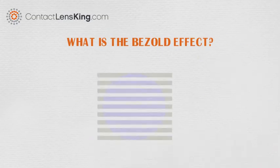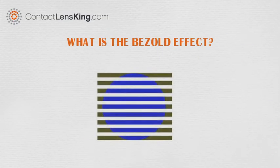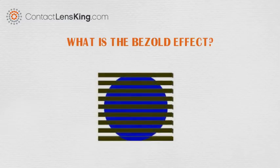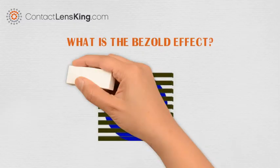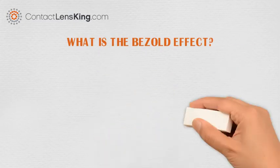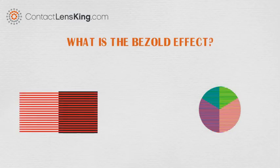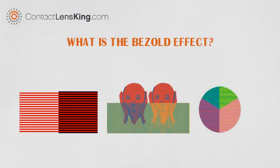Or in this last one, if we replace the white horizontal lines with blue, does the circle seem darker? Although the bezeled effect is just an optical illusion, it does highlight how the simplest changes in color can alter our perception of reality.